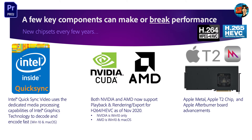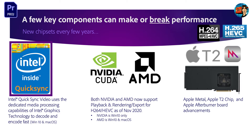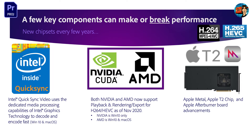A few key components can make or break performance, and keeping up to date with new chipsets every few years is a great idea. Intel QuickSync is a good example — it has changed multiple times, enabling H.264 and HEVC playback for drone footage, phones, and various cameras, making heavy codecs usable in an editing scenario. It originally only worked on certain Intel combinations like Core i5, i7, i9, and some Xeons. Today it's less of a concern because NVIDIA CUDA and AMD have been added for H.264 and HEVC playback, rendering, and export.